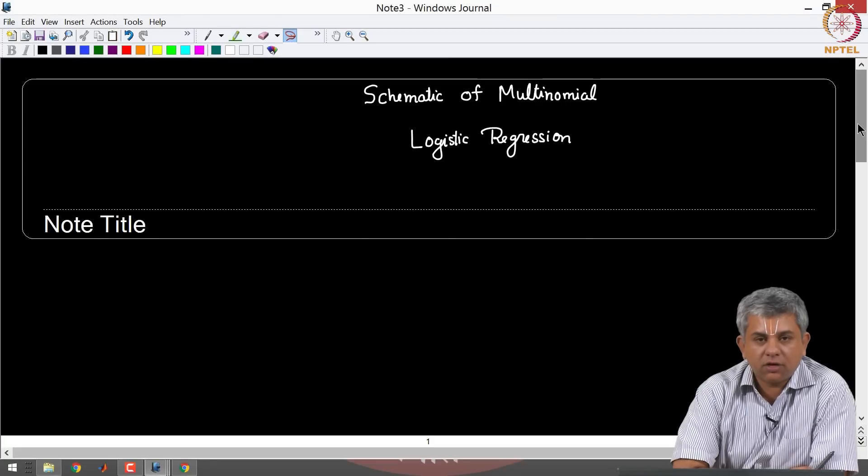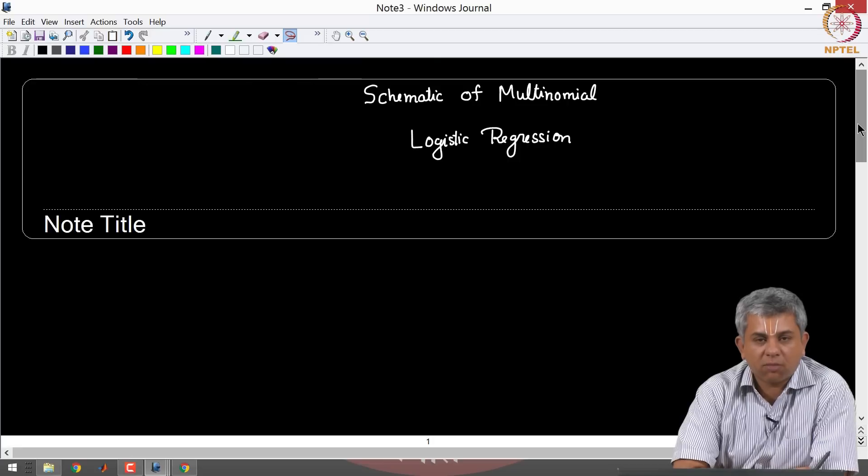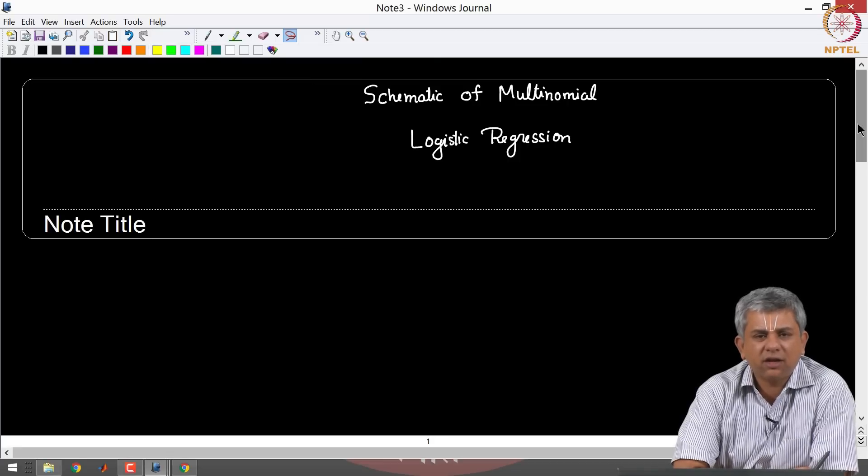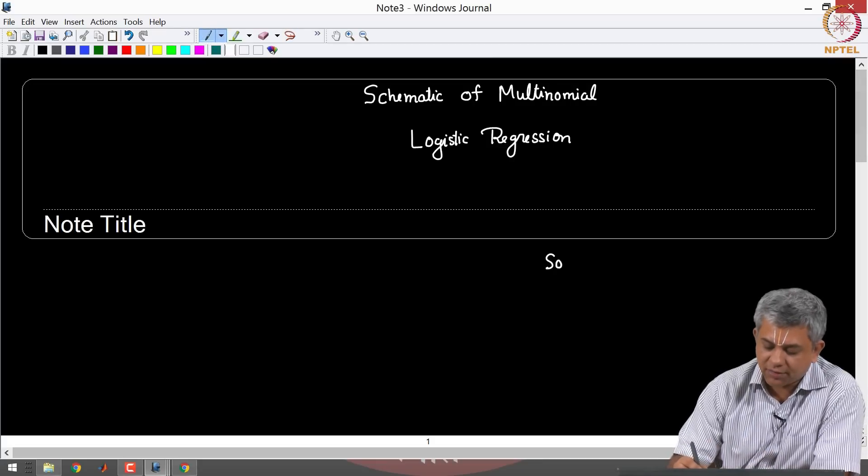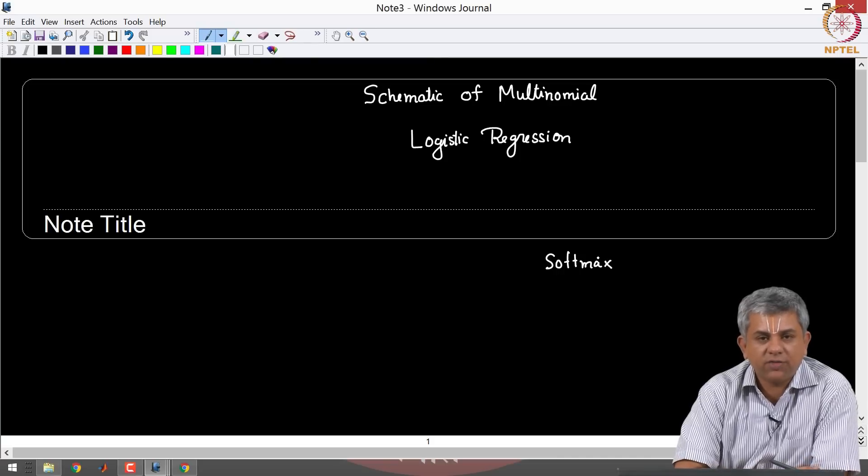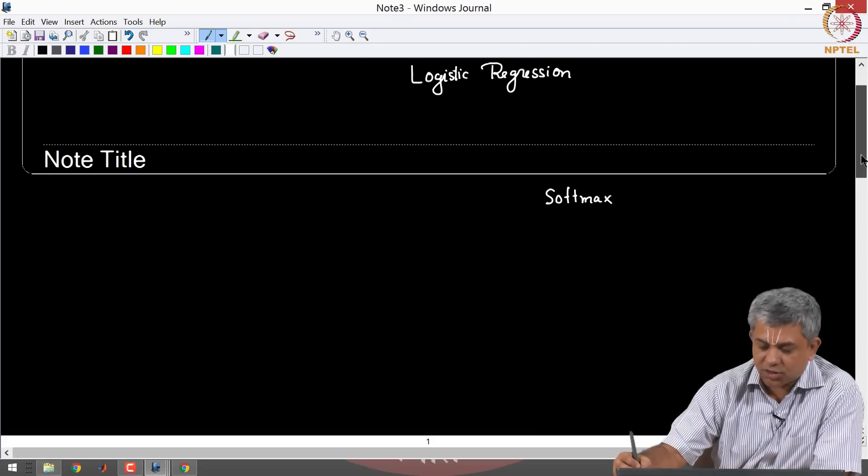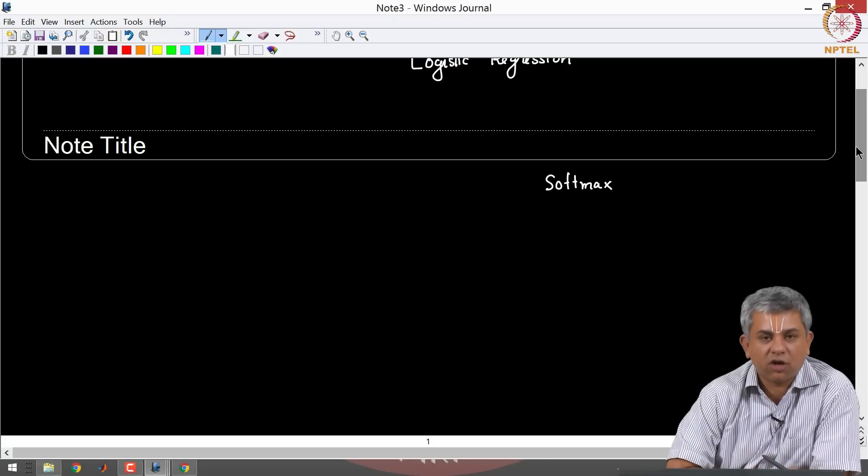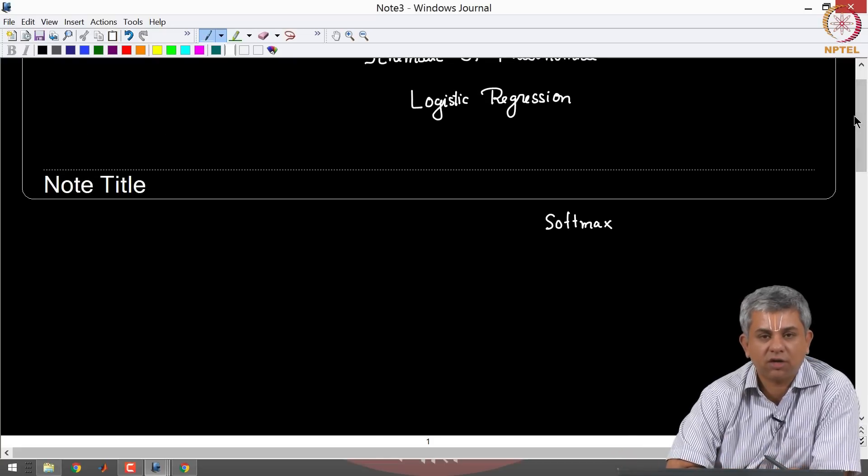Welcome back. In the previous videos, we had seen how to use logistic regression for multi-class problems. We had done that using a softmax function if you remember. We had also looked at what the corresponding loss function was. In this video, I want you to see a simple schematic which will also tell you how exactly a matrix comes when you deal with weights with multiple classes in multinomial logistic regression.